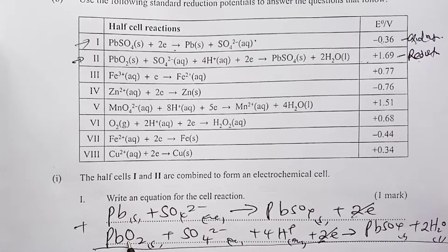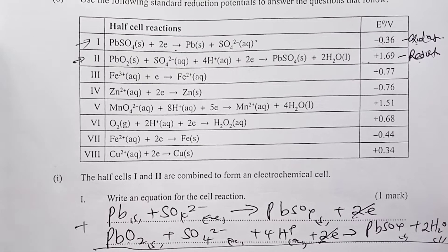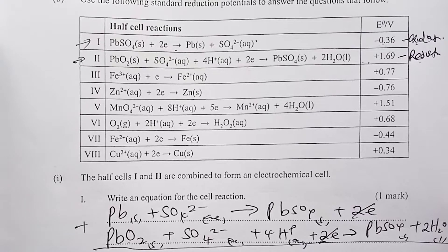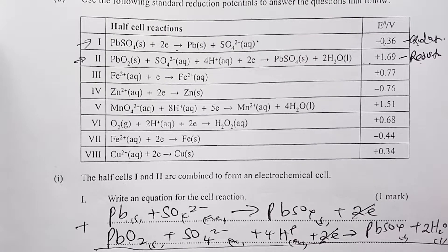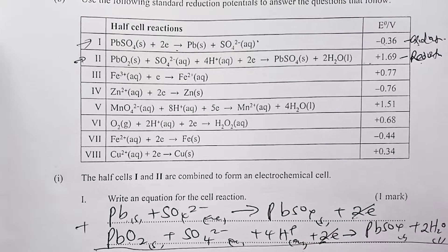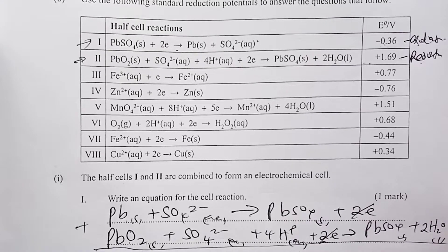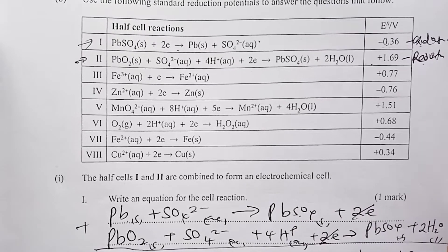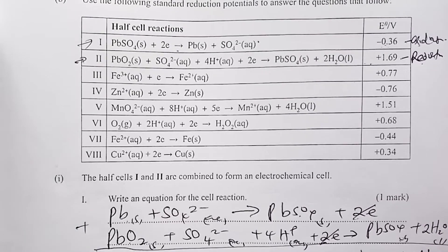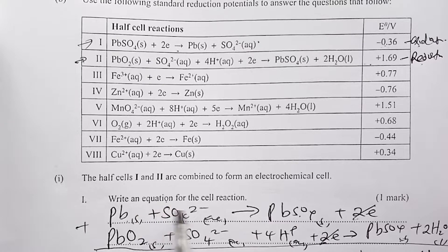So starting here: we will have lead solid and lead solid, two sulfate ions aqueous, and four hydrogen ions aqueous. Then on this side, I will have two of lead sulfate solid and two water. This would be your net equation for the cell when you combine half cells 1 and 2.